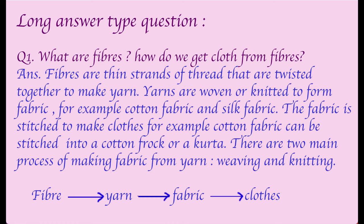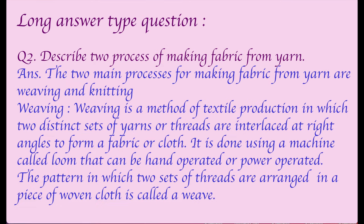There are two main processes of making fabric from yarns: weaving and knitting. The process follows these steps: fibers are twisted to make yarns, yarns are knitted or woven to make fabric, and fabric is stitched to make clothes.